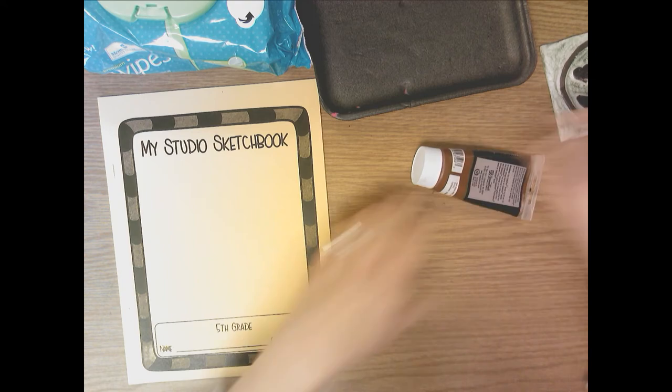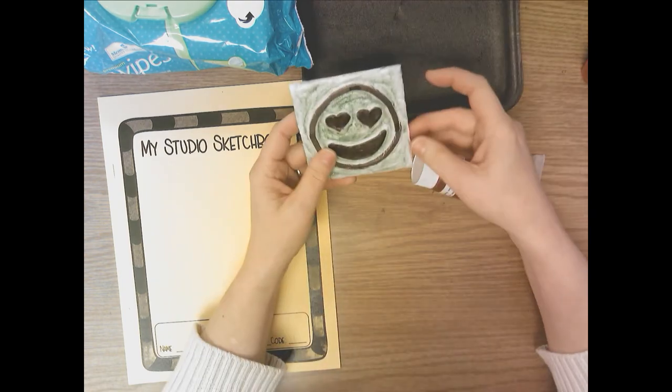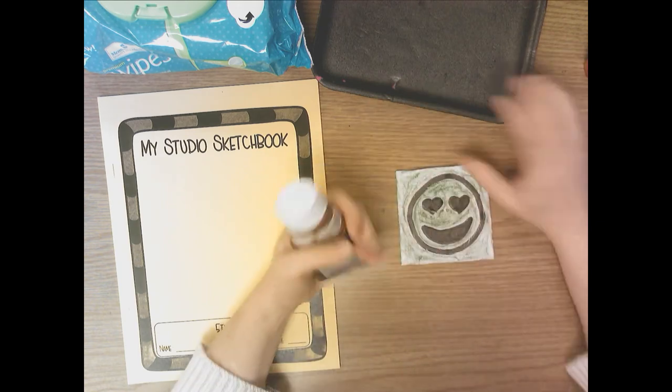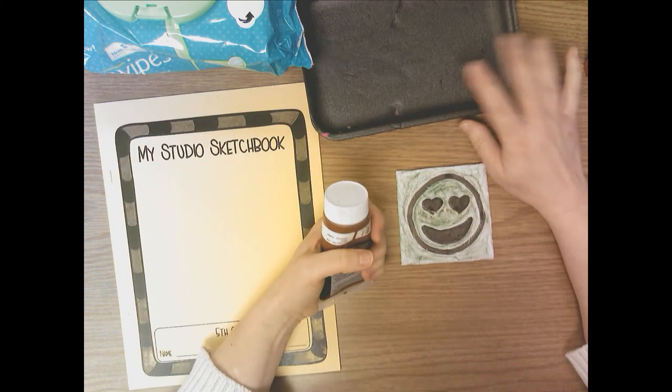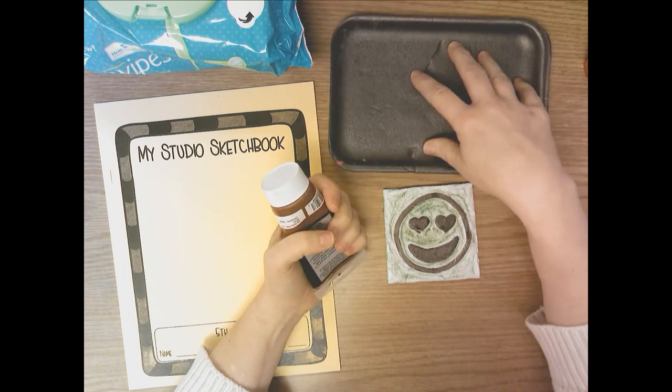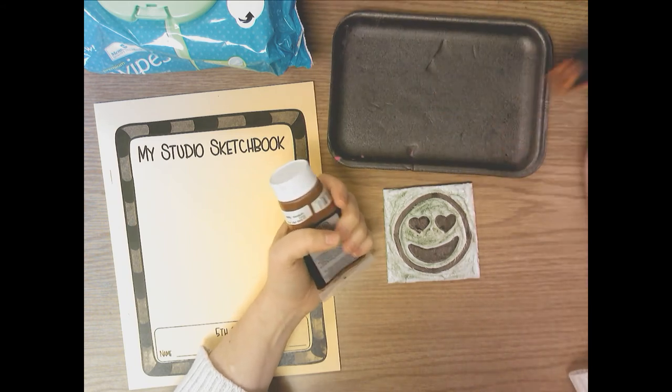All right, so now that you've created your styrofoam printing plate, you're ready to print it. So inside the printmaking studio, you're going to find ink trays. And all they are are styrofoam trays to put ink in. You're going to need a brayer and some ink.